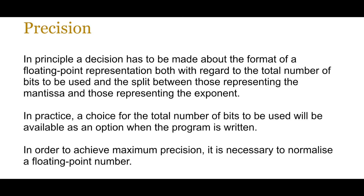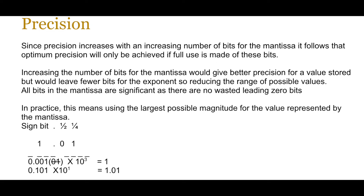In order to achieve maximum precision, it is necessary to normalize a floating-point number. Precision is basically the accuracy of the number - the amount of detail that number will have, the amount of decimal points that you might use. Since precision increases with an increasing number of bits for the mantissa, it follows that for optimum precision we need to ensure that we make maximum use of those bits. If the binary floating point is towards the right-hand side, that means we are not making maximum use of it. Therefore, we tend to move the binary point to the left next to the sign bit, which we practiced when calculating floating-point binary representations in the previous lesson.